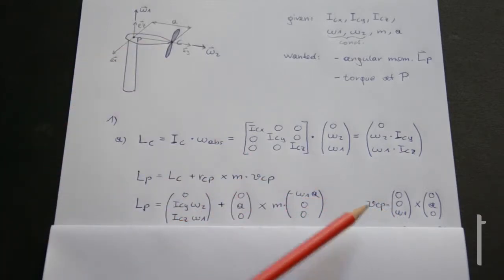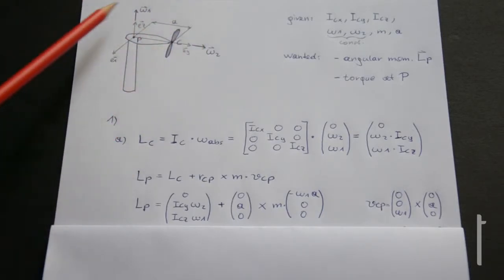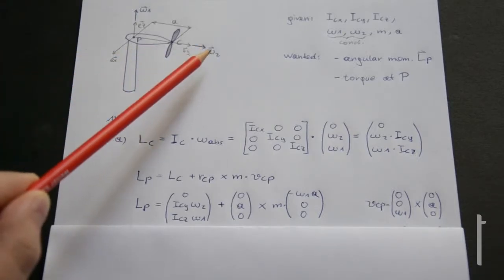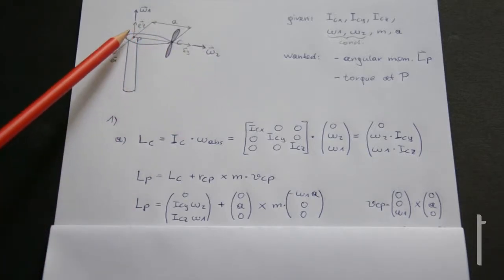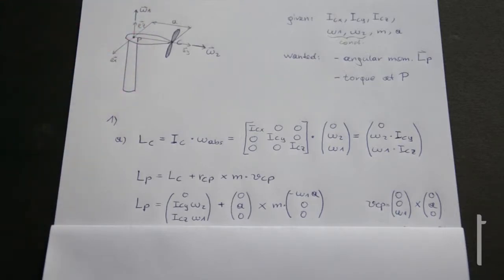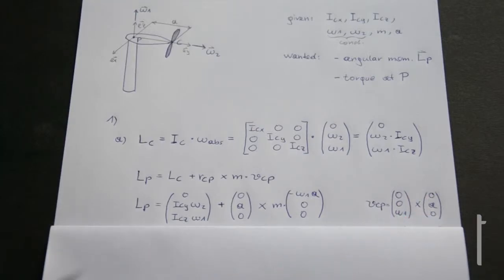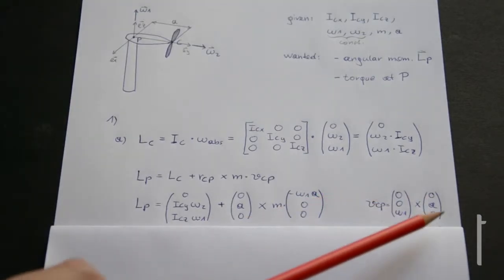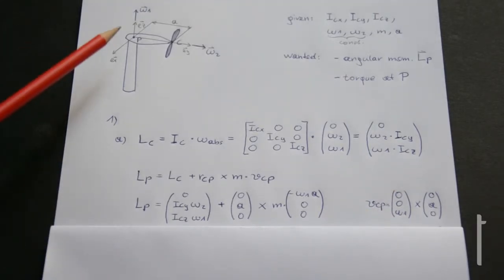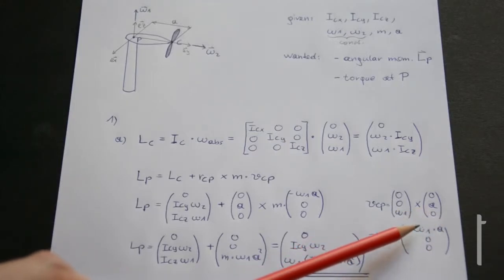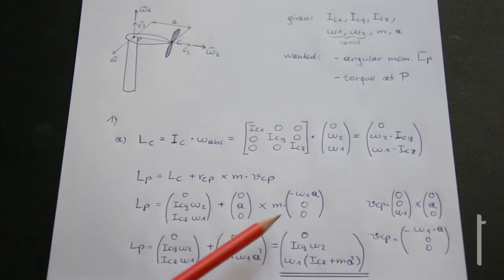The velocity VCP requires a separate calculation. Point C rotates around point P with angular velocity omega 1 only — omega 2 is parallel to distance A, so its cross product with A gives zero. Therefore VCP = (0, 0, omega 1) cross (0, A, 0), giving minus omega 1 times A in the negative x direction. Completing the cross product yields the full angular momentum vector LP.